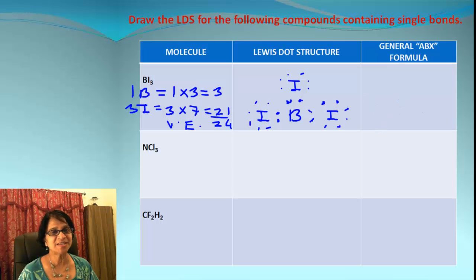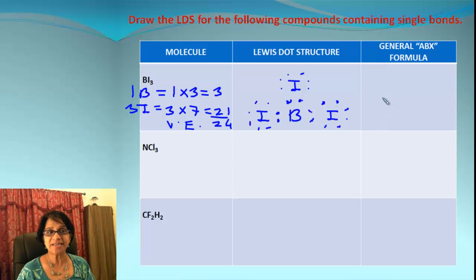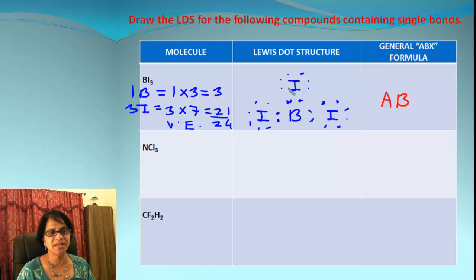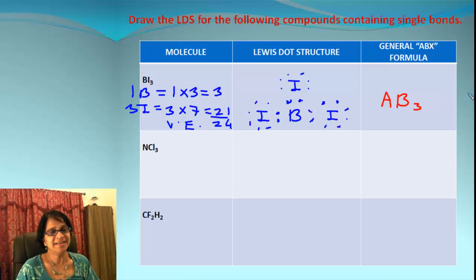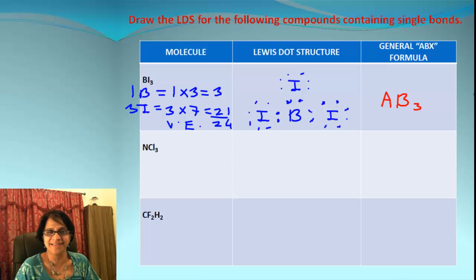What is the ABX formula for BI₃? The number of central atoms is only 1 — that is boron. The number of surrounding atoms is 3. And for X, we do not have any spare remaining electrons on the central atom. So the formula is simply AB₃.